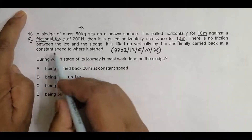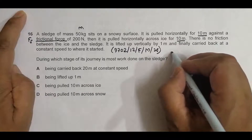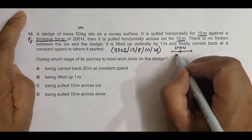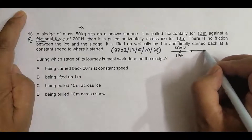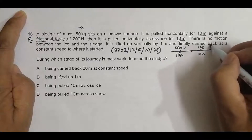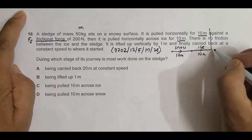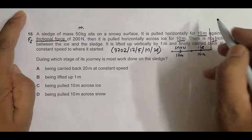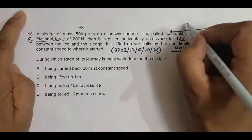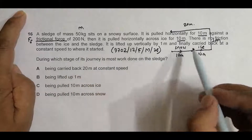So there are four stages total. First, across the snow for 10 meters. Then across ice for 10 meters. Then it is lifted up one meter. And finally, it is carried back to where it started at uniform velocity — a distance of 20 meters.